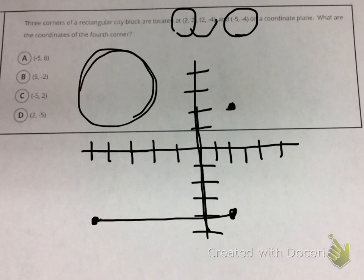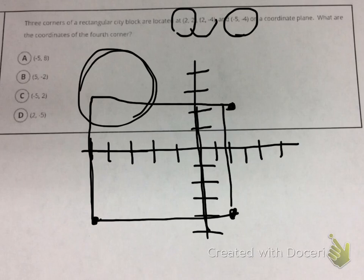So if I draw a line to connect my corners, I know that my fourth corner is going to be in this area.